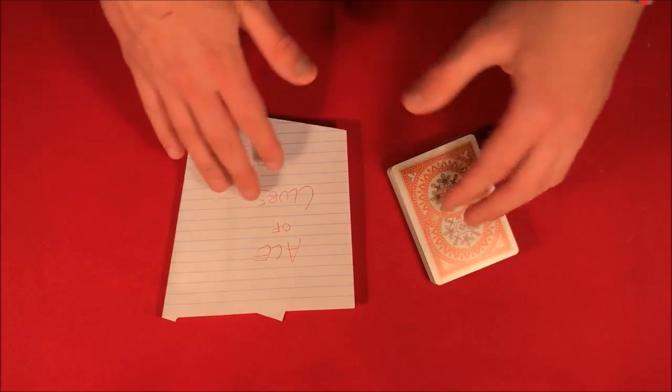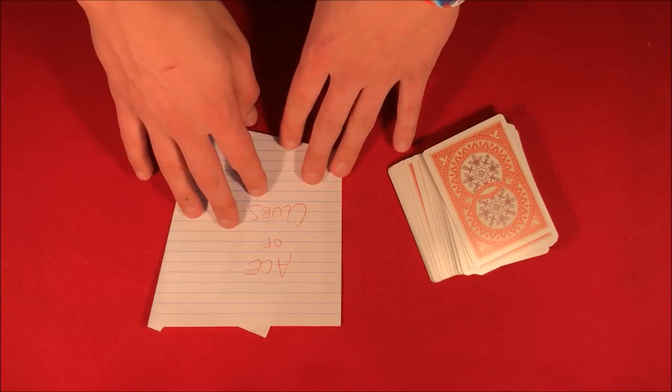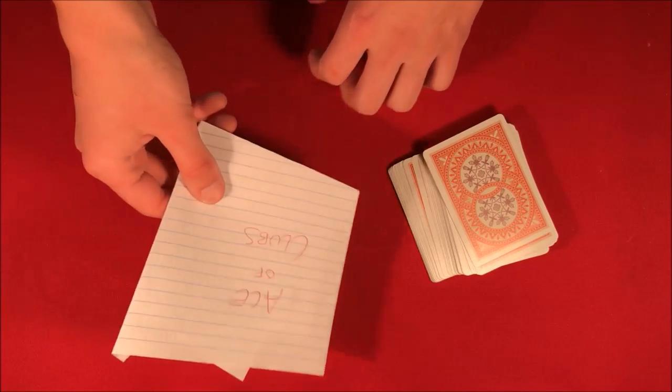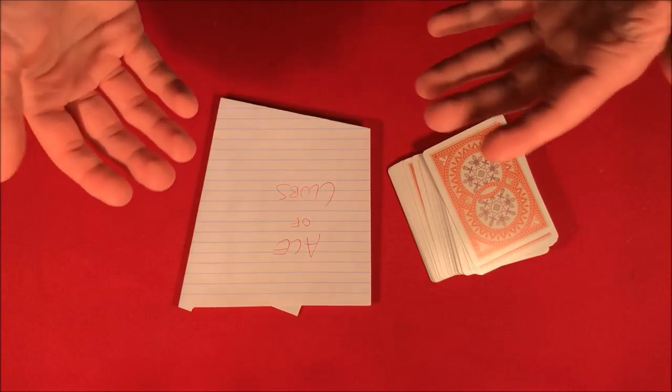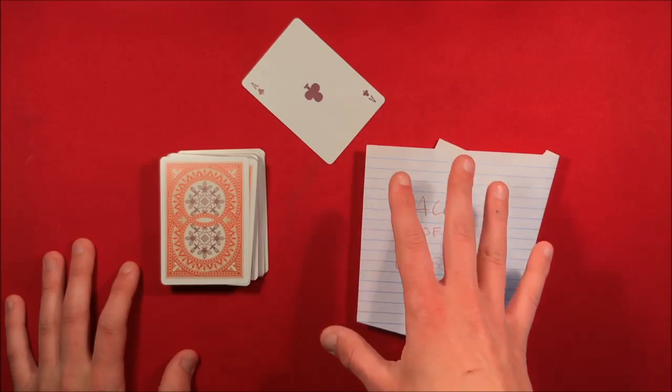This is kind of how the trick works. Penn would kind of just have the spectator choose a random number, and then whatever number they chose it would ultimately lead up to his prediction. So I'll go ahead and show you guys how to do this right now. Don't forget to stick on for the tutorial.